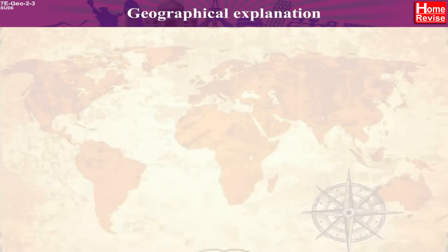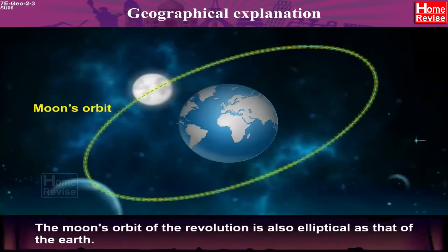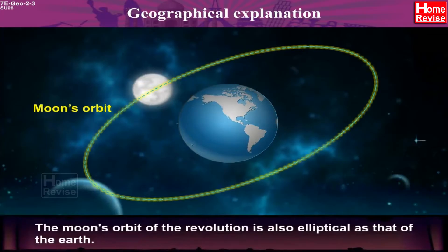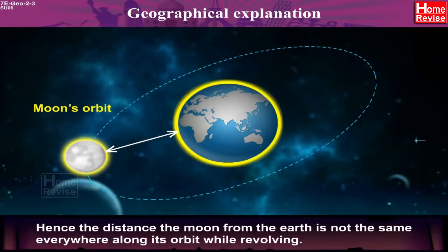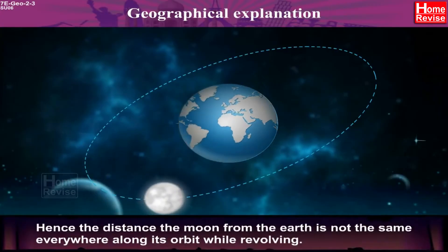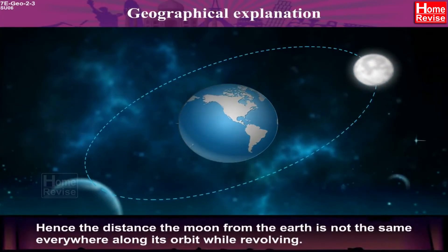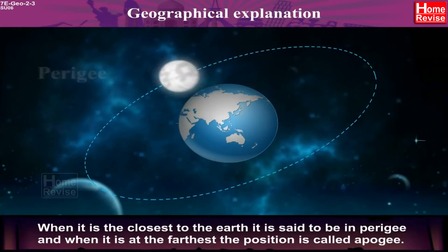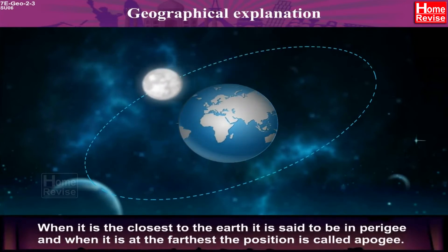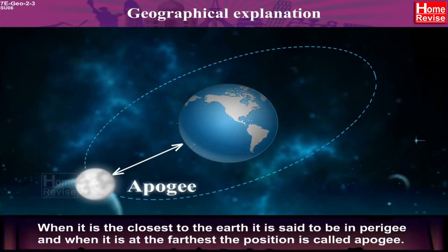Geographical Explanation: The Moon's orbit of revolution is also elliptical, as that of the Earth. Hence, the distance of the Moon from the Earth is not the same everywhere along its orbit while revolving. When it is closest to the Earth, it is said to be in perigee, and when it is at the farthest, the position is called apogee.